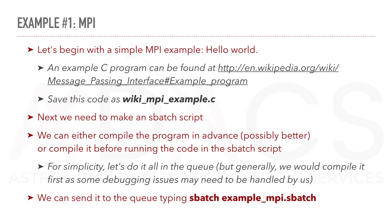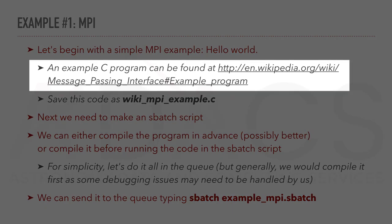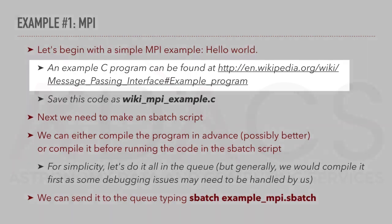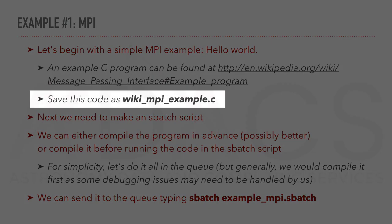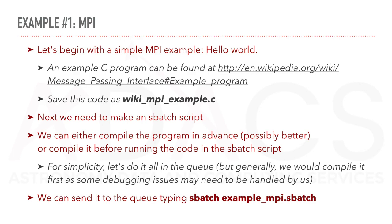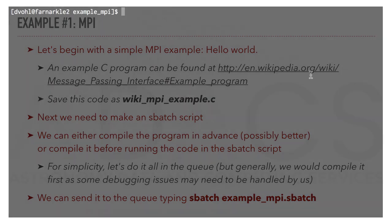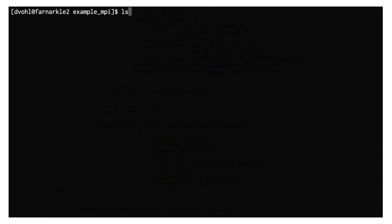Let's begin with a simple MPI example, the Hello World program. An example C program can be found at the following address. Save this code as wiki.mpi.c. For these examples, I will use the new OzSTAR supercomputer. If I list the files that I have in my current repository, we can see that I have already downloaded the wiki.mpi example.